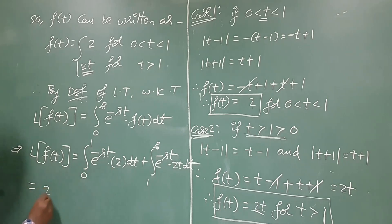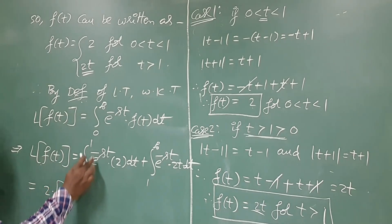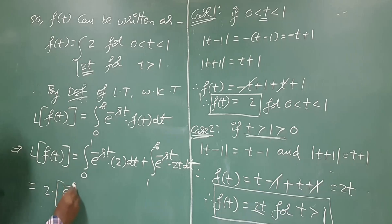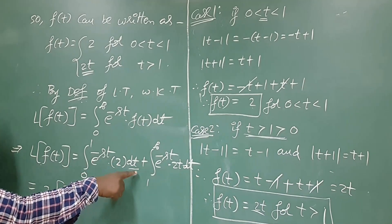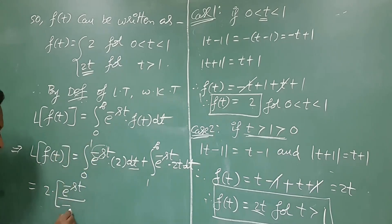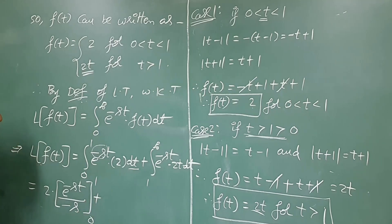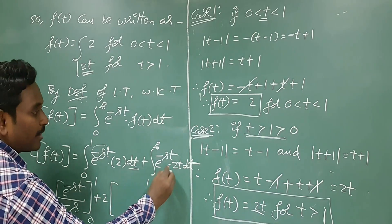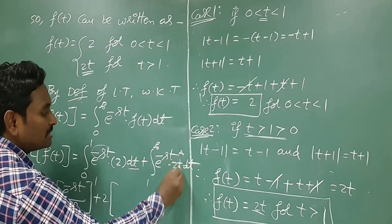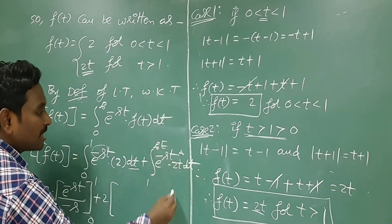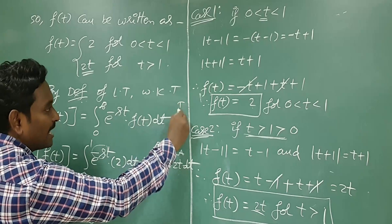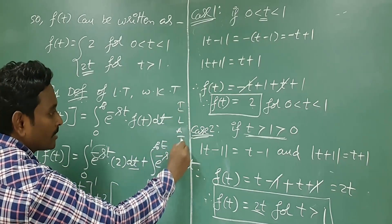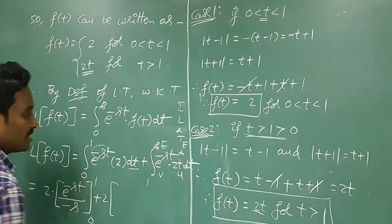For the first integral, 2 is a constant: integration of e to the power minus st gives e to the power minus st divided by minus s, evaluated within limits 0 to 1. For the second integral, 2 is taken outside, and we apply the UV rule — by the ILATE rule, t is the algebraic term (u) and e to the power minus st is the exponential term (v).